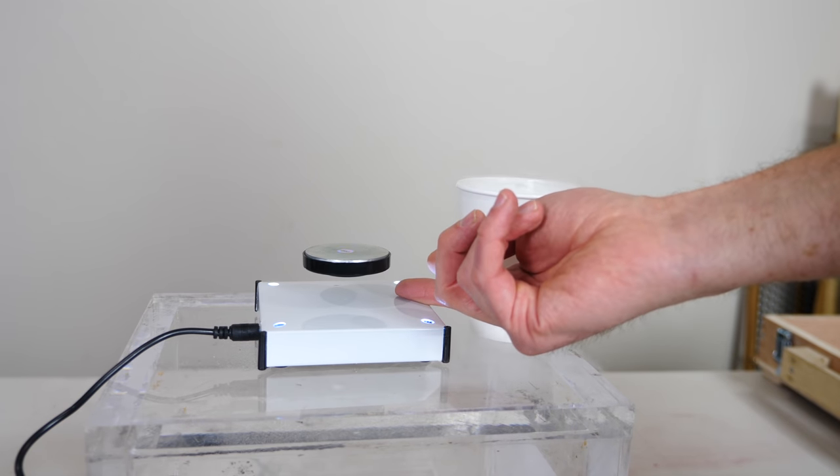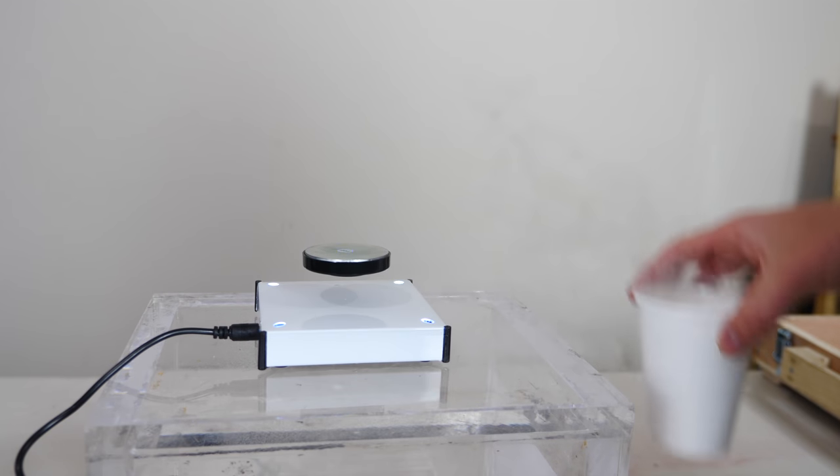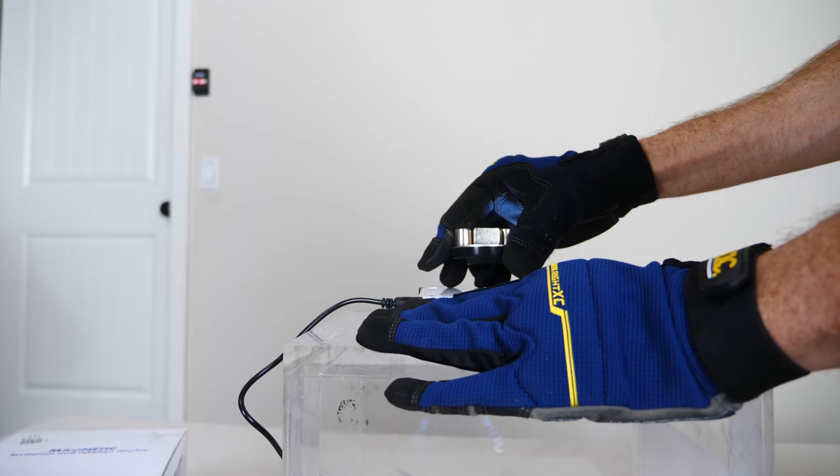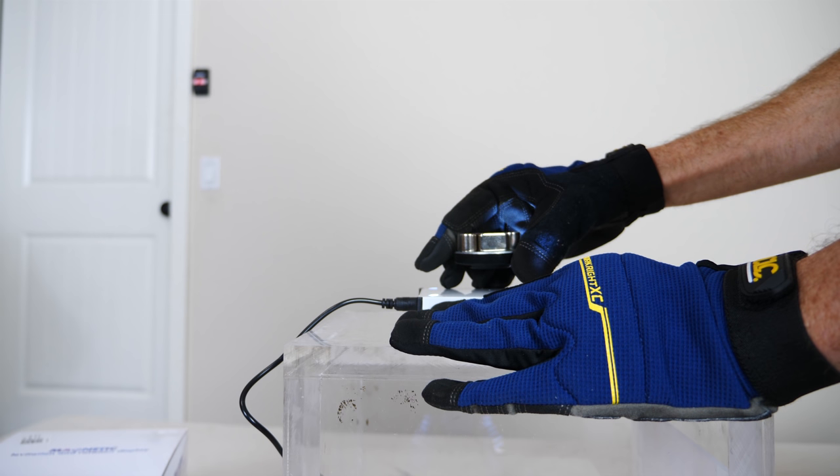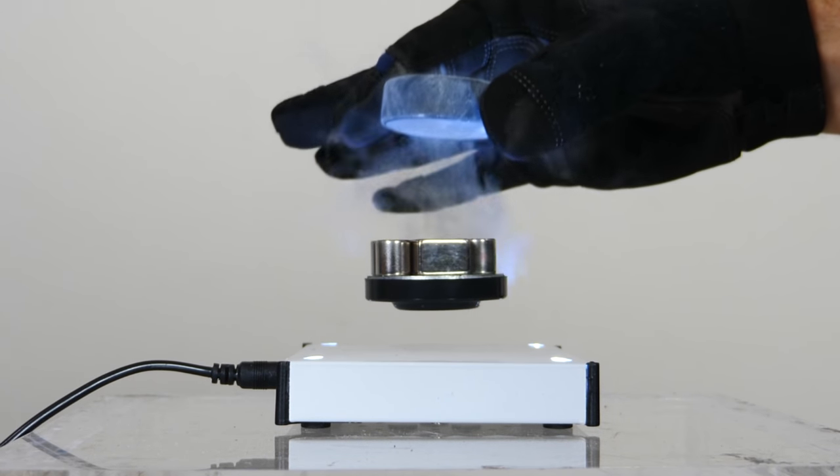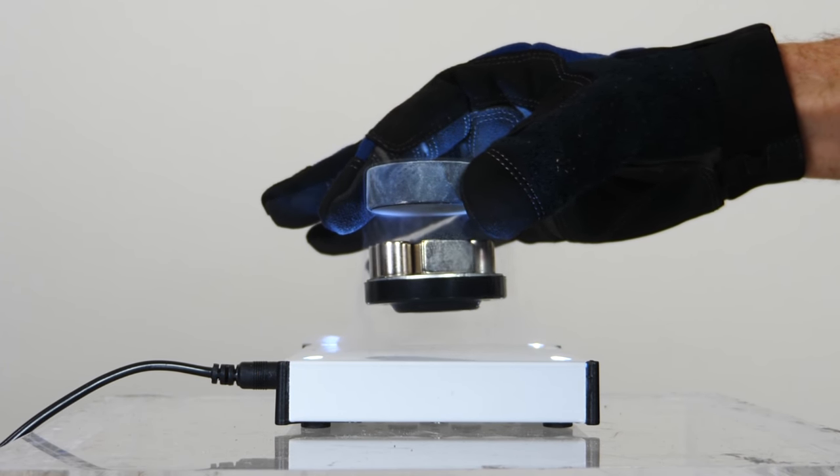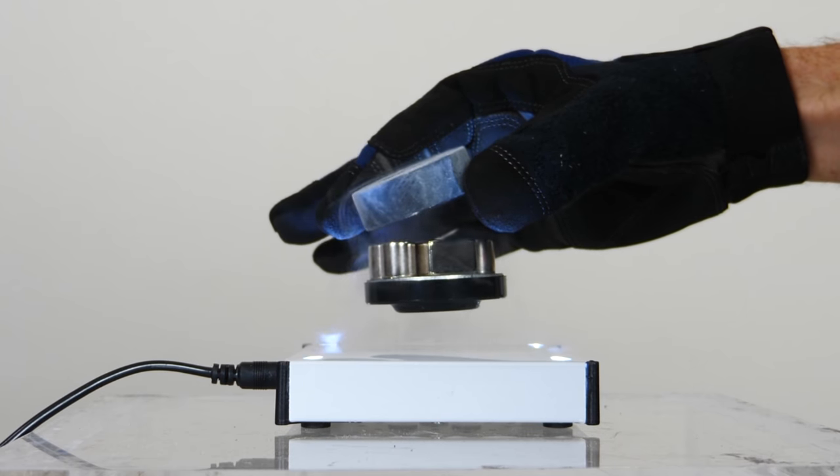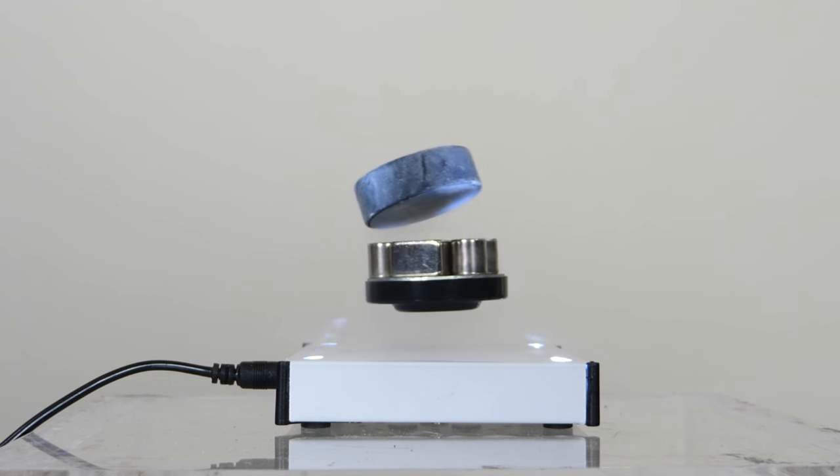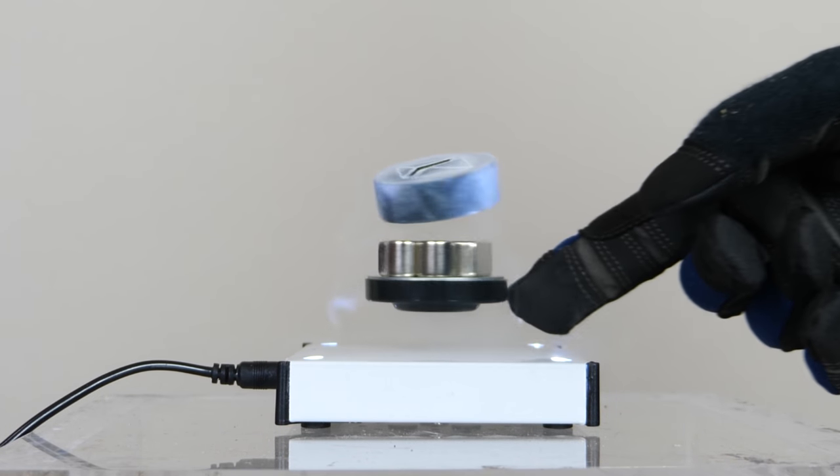Okay, now let's try to do a double levitation with the type two superconductor. First we have to cool it down with liquid nitrogen. There we go, look at that, double levitation.